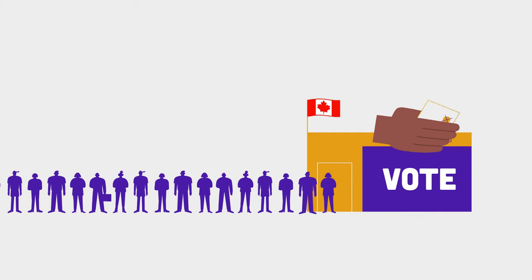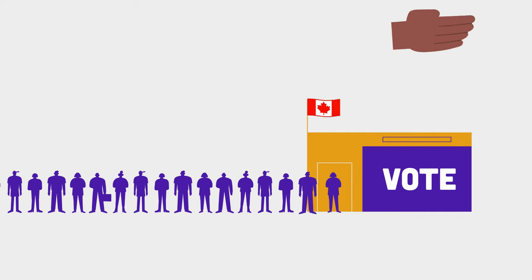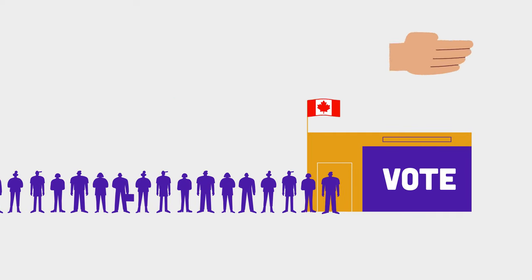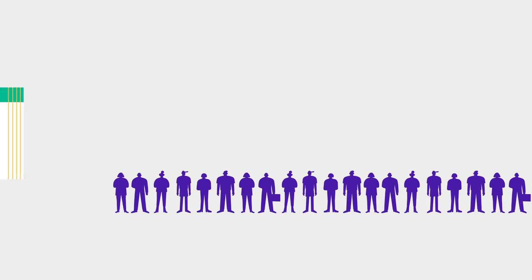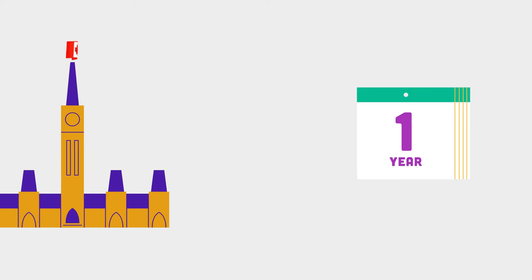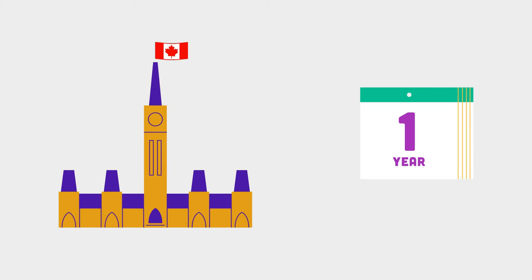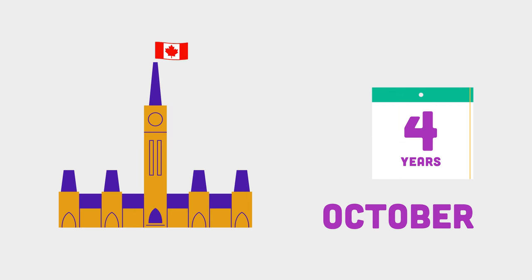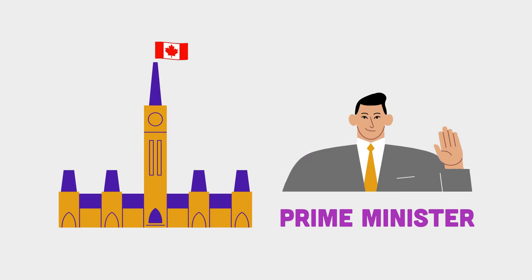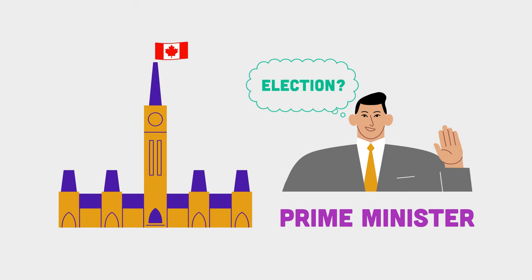Every few years, Canadians go to the polls to elect Members of Parliament to make decisions about Canada's future. Under Canada's election law, federal elections are scheduled every four years and take place in October. However, a Prime Minister can request that a federal election be held at any time, as long as it is no later than five years after the previous election.